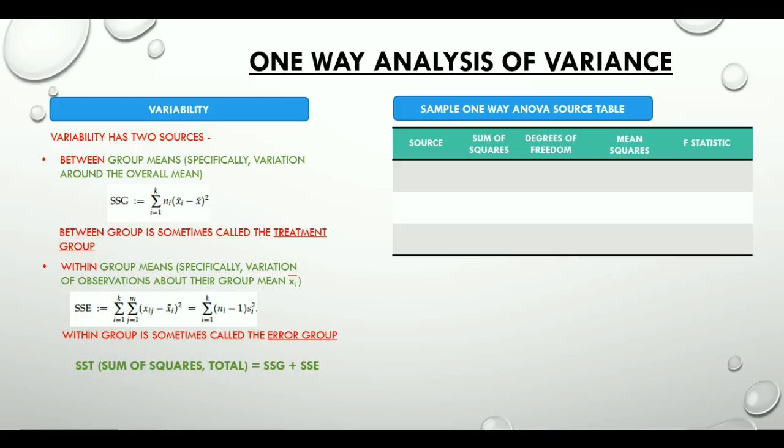Next header is the mean squares. It is a kind of average variation and are actually sample variances. It is found by dividing the variation by the degrees of freedom. That is dividing the number in the sum of squares column by the number in the degrees of freedom column.